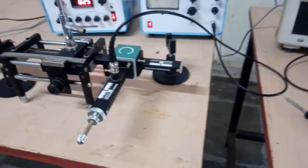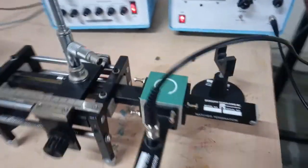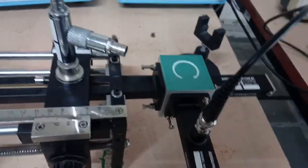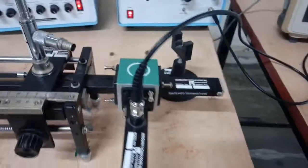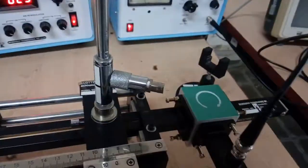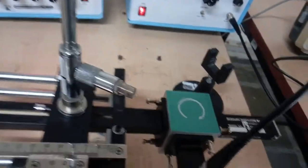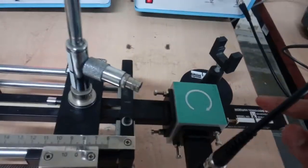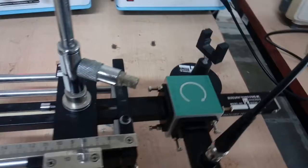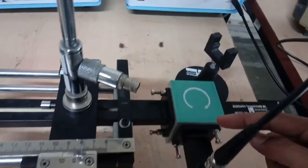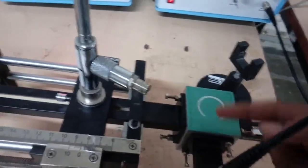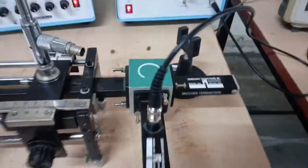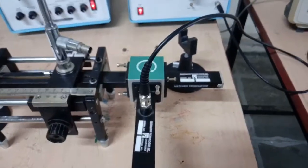So this, as we can see the operation of circulator, it only allows the signal transmission in forward direction from port 1 to port 2 not port 3, and port 2 to port 3 not port 1, and port 3 to port 1 it allows. Thank you.